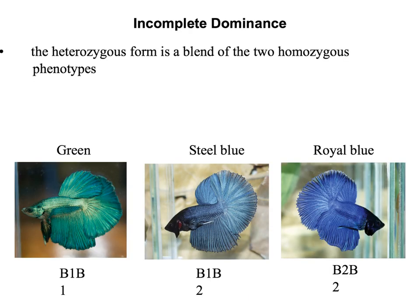The next type of non-Mendelian inheritance is known as incomplete dominance. This is where the heterozygous form is a blend of the two homozygous phenotypes — for example, red and white would blend to pink, or black and white would blend to gray. Looking at betta fish: homozygous B1B1 is green, homozygous B2B2 is royal blue, but heterozygous B1B2 produces steel blue, which is a combination of the two other phenotypes.